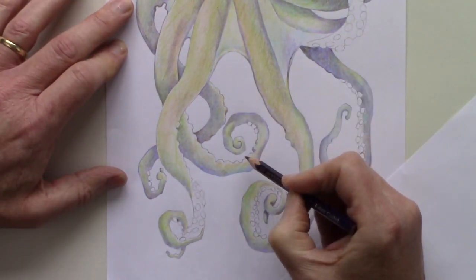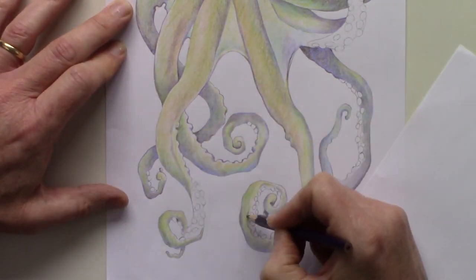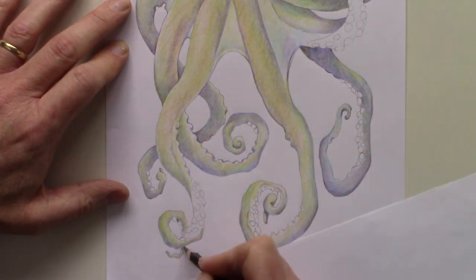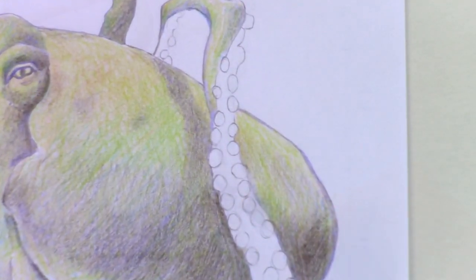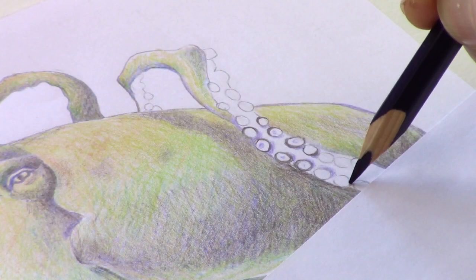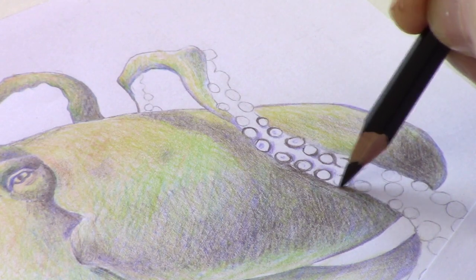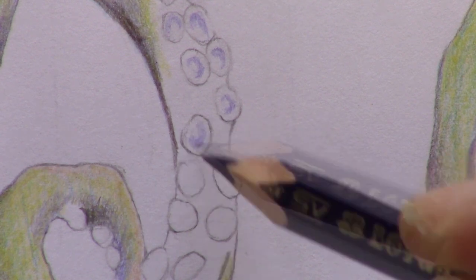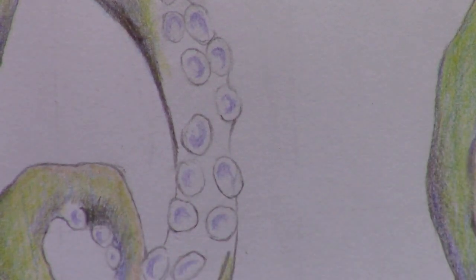The tentacles towards the back of the octopus have more blue and purple added to the shadows, which gives the impression that they're further away. The suckers on an octopus's tentacle are ringed with a dark outline, and I use a dark brown pencil to do this. For the middle of the sucker, I use purple to create that little circular shadow shape.